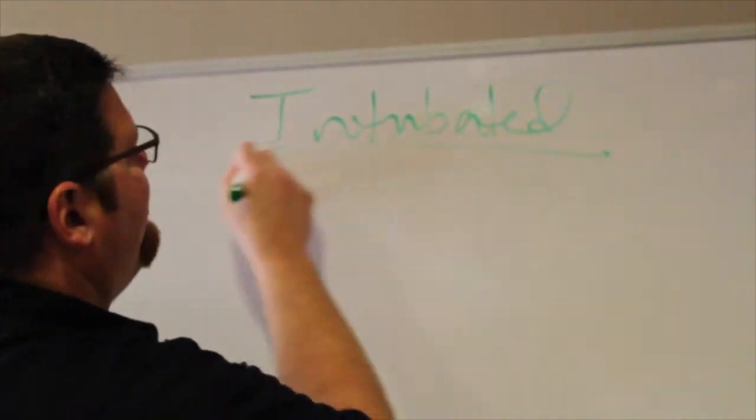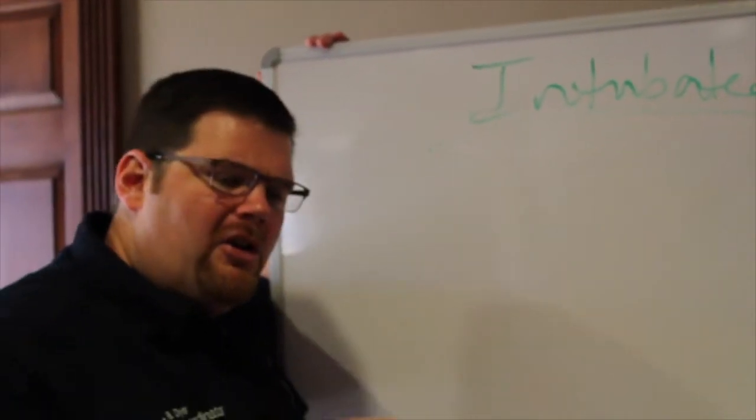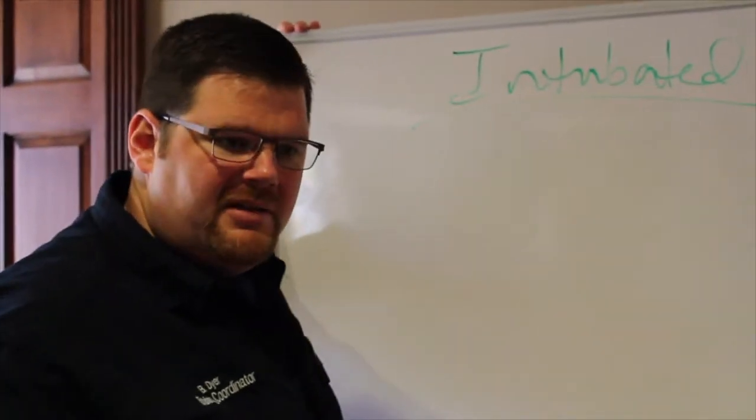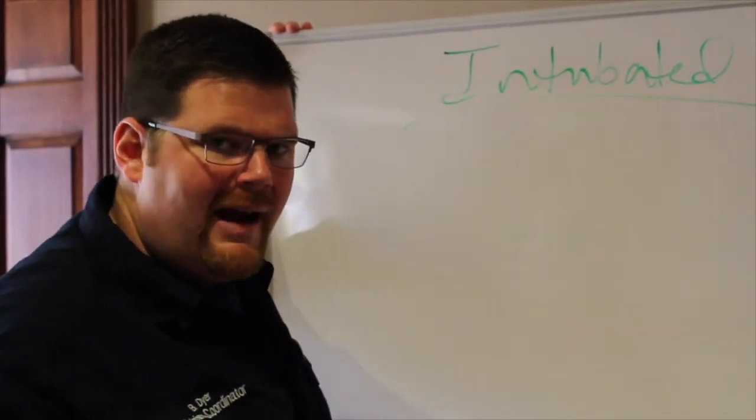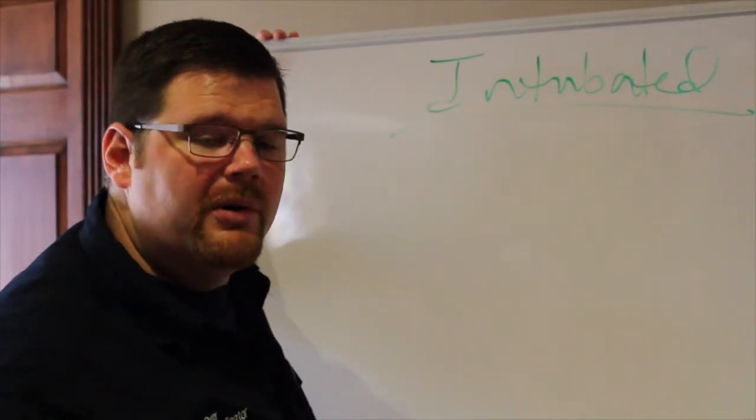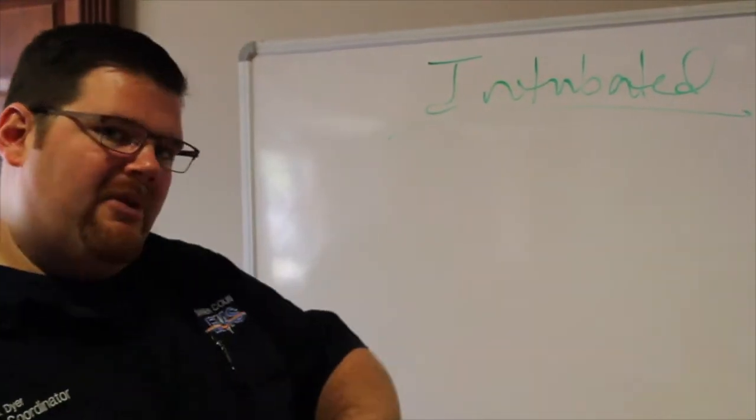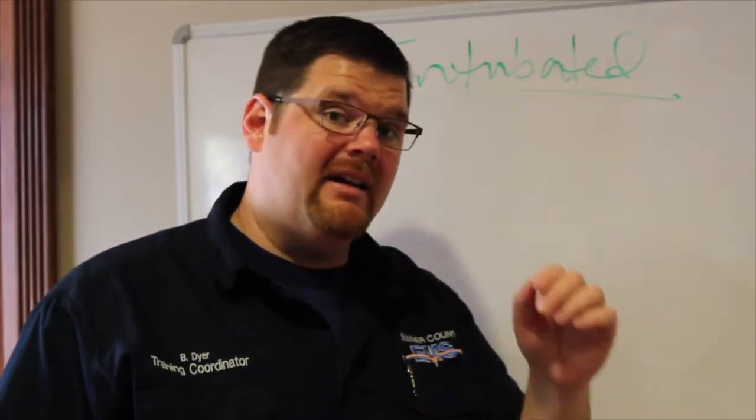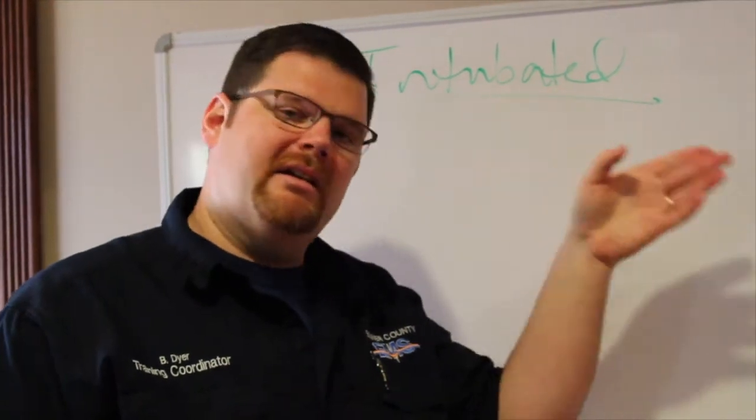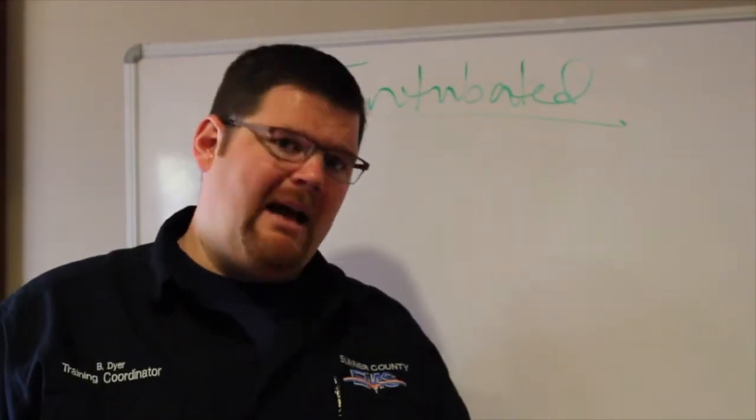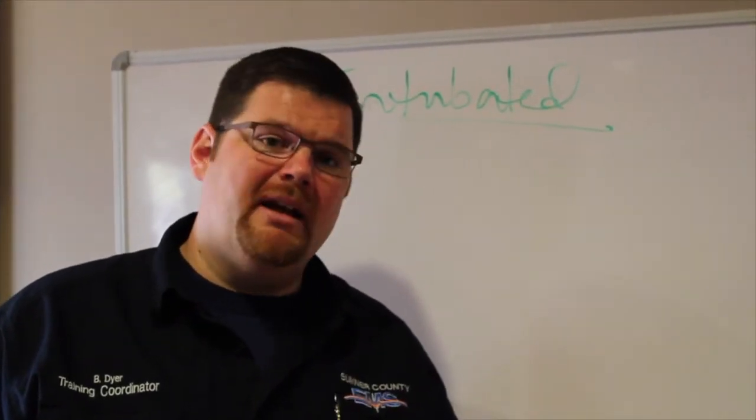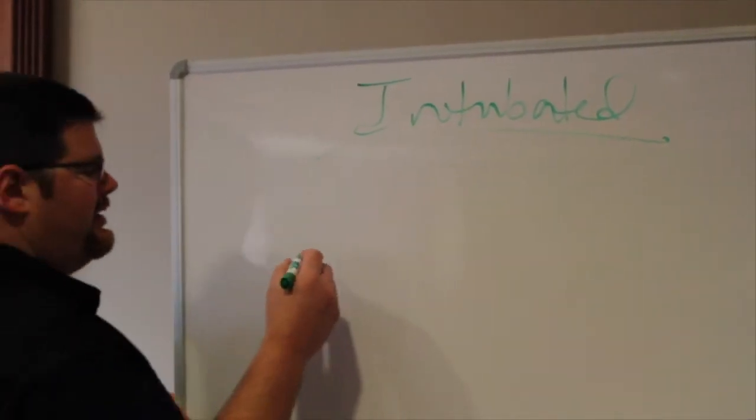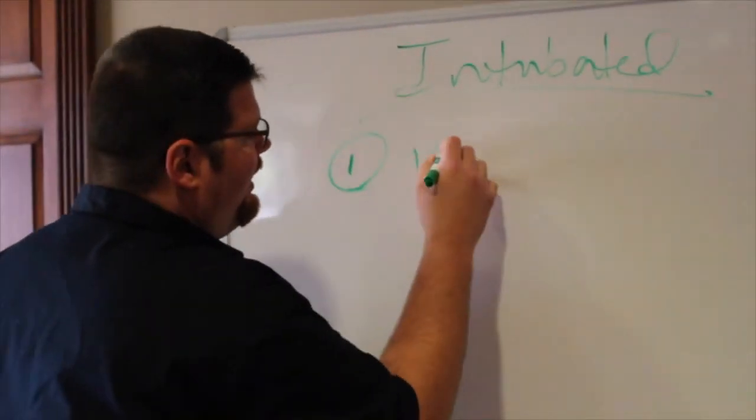In an intubated patient, your most hands-down, definitive way of knowing that you have placed an endotracheal tube in the right place is seeing it go through those vocal cords. Aside from that, the most hands-down, definitive way of knowing that that tube stays where you put it is capnography. If you have time to intubate somebody, you quite simply have time to utilize capnography. That being said, in the intubated patient, obviously verifying placement.